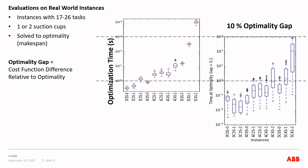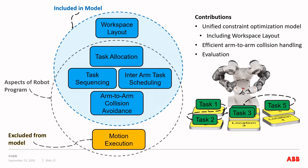To summarize, we captured the high-level decisions of the robot program plus workspace layout optimization in one unified model. We developed an efficient set of constraints to avoid arm-to-arm collisions. We demonstrated that we could find optimal solutions for a set of realistic cases and find good solutions fast. I would like to express my gratitude to my collaborators, Christian Schulte and Mats Karlsson, on this work.